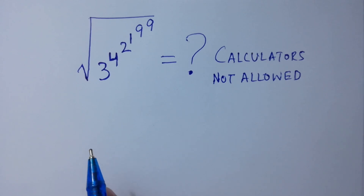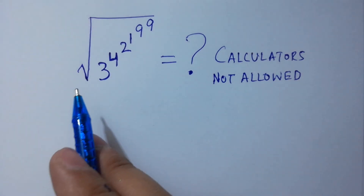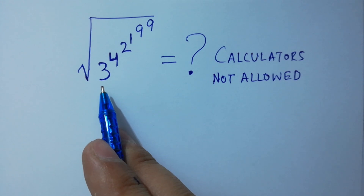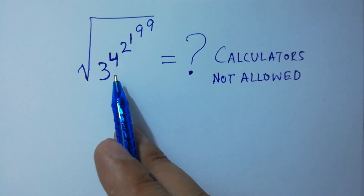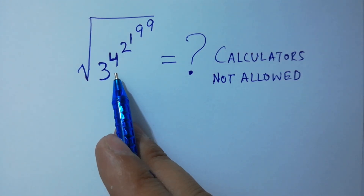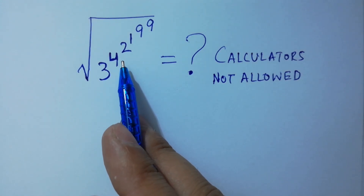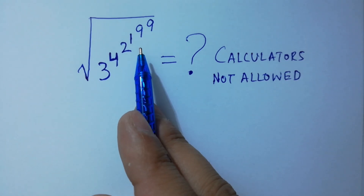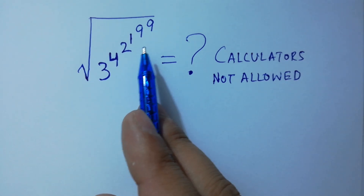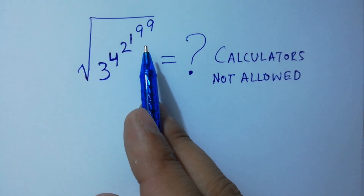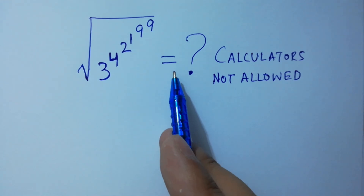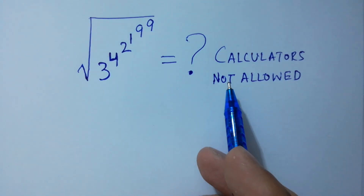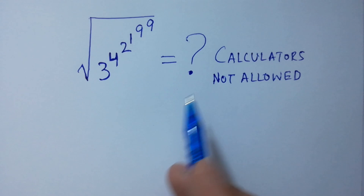Hello friends, can you solve this: the square root of 3 to the power 4 to the power 2 to the power 1 to the power 9 to the power 9 is equal to what? Calculators not allowed.